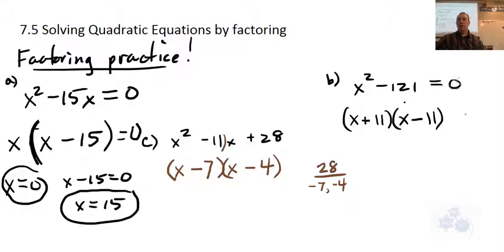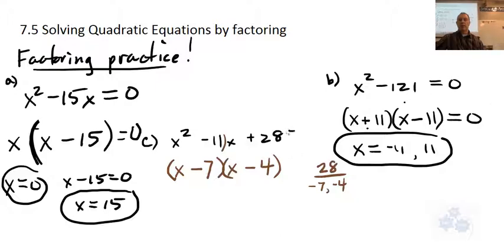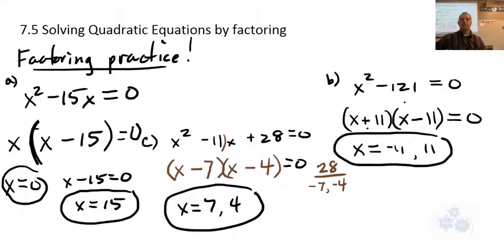So that's your solutions there. What about this one? Well, if that equals zero, just let that equal zero. And here I won't show the work now because you should be able to figure this out. So x equals negative 11 and x equals positive 11. And of course here, if this equals zero, this equals zero, x equals 7 and x equals 4. Factoring practice.